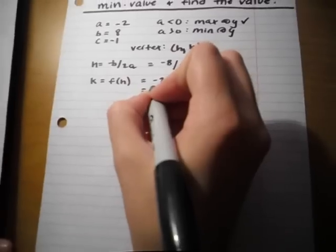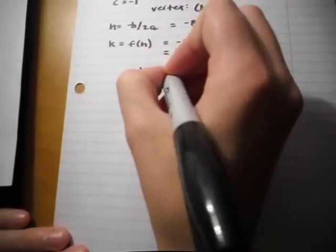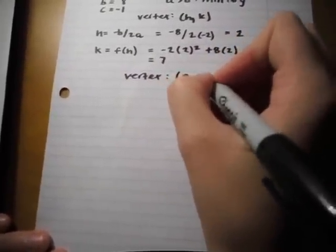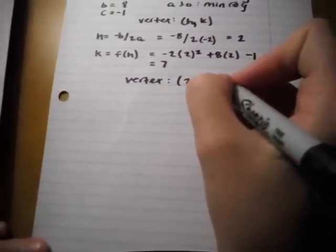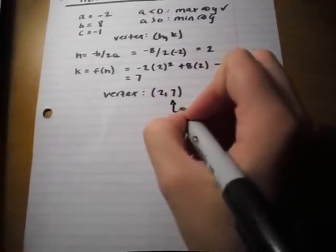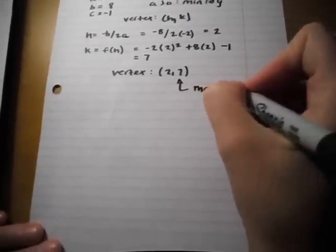The vertex is (2, 7). This is our maximum value at 7.